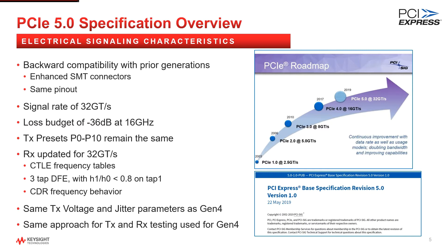For the receiver, CTLE tables are updated for 32 gigatransfers. Now a three-tap DFE with a ratio of H1 divided by H0 less than 0.8 for the first DFE tap. The CDR frequency behavior is updated for the faster rate. The same transmit voltage and jitter parameters as in generation 4, just updated to generation 5 values. And lastly, the same testing approach on the transmitter and receiver as in Gen 4.